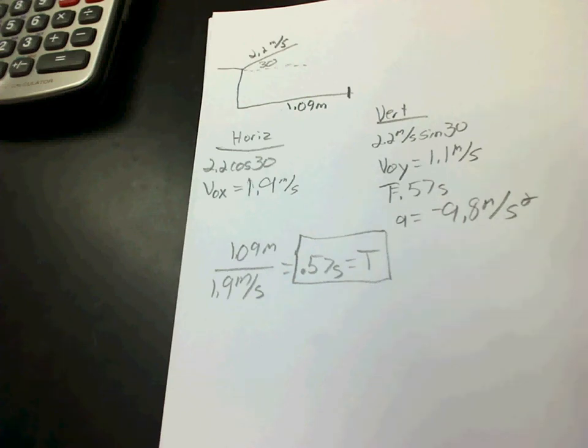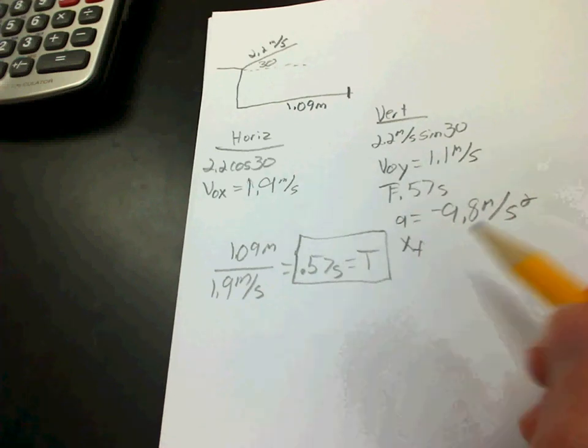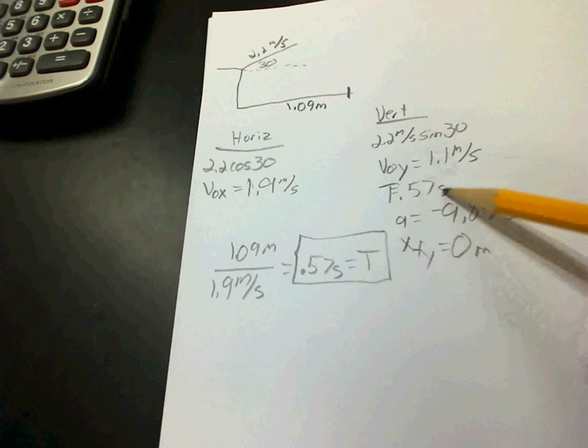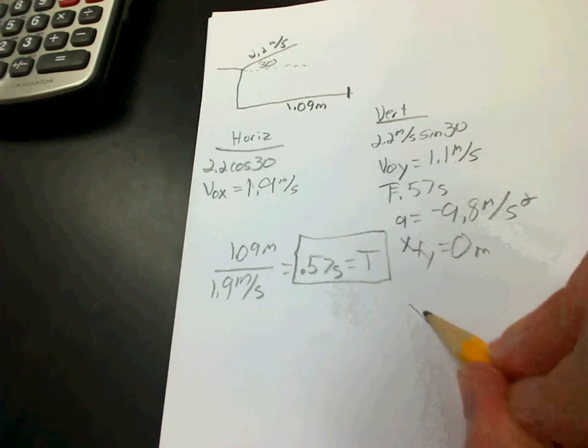So let's just say that we know that my position, my final position in the y direction is zero. Just making that the ground floor. Calling that good. So we have that, that, that, and that. Then all you have to do is, like I said, find one of your kinematics, which hopefully you're in front of me and you picked out the fourth one.